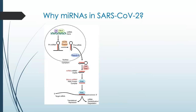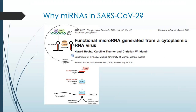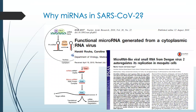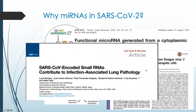Although most viral microRNAs have been described in DNA viruses, the production of microRNAs from cytoplasmatic RNA viruses has also been proved. For instance, it has been identified the production of microRNAs in the dengue virus, and small RNAs encoded in the SARS-CoV-1 genome acting in the viral infection process were recently identified.